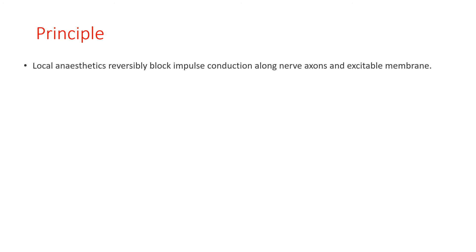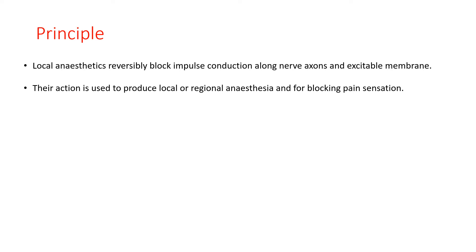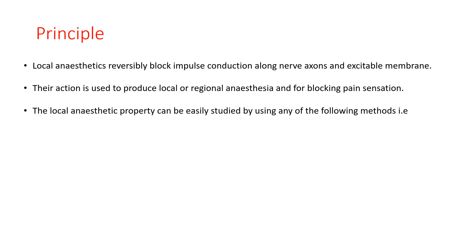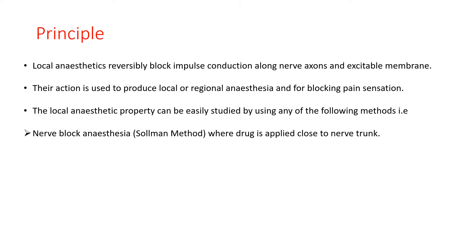Principle: Local anesthetics reversibly block impulse conduction along the nerve, axon and excitable membrane. Their action is used to produce local or regional anesthesia and for blocking pain sensation. The local anesthetic property can be easily studied by the nerve block anesthesia method, also called as the Solman method, where the drug is applied close to the nerve trunk.